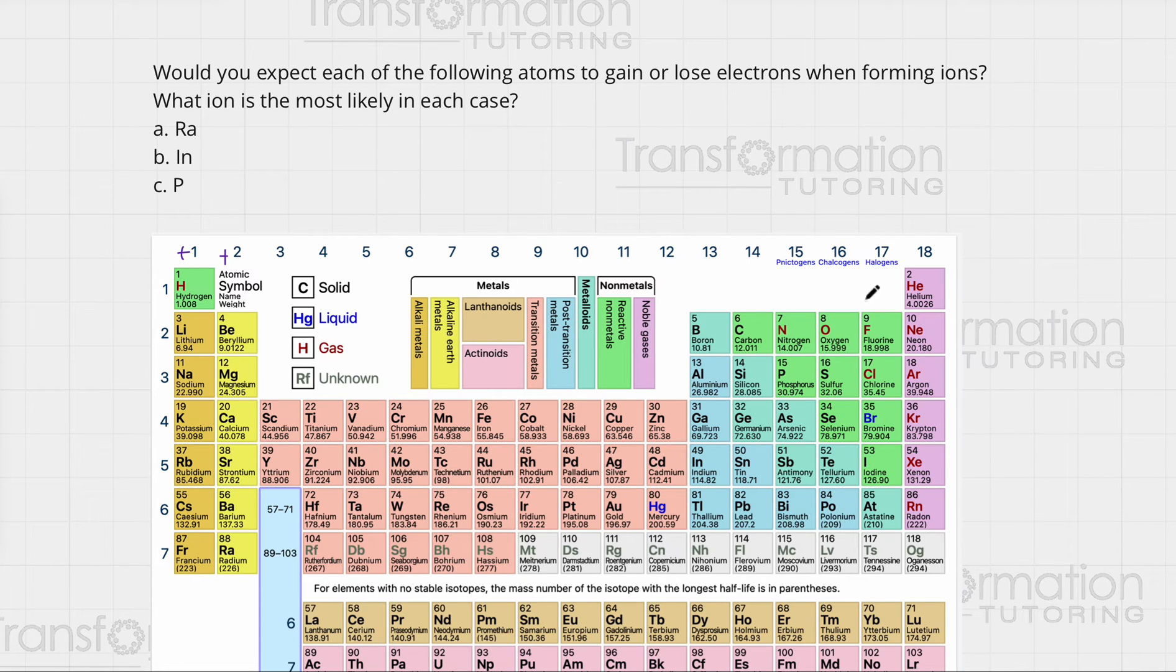Group 17 will have a minus 1 charge. It wants to gain one electron to be like a noble gas because they have seven valence electrons, so they want one more to have eight. The charge here is minus 2 for group 16 and minus 3 for group 15. Now that we know that, let's figure out the charge for each one of these.